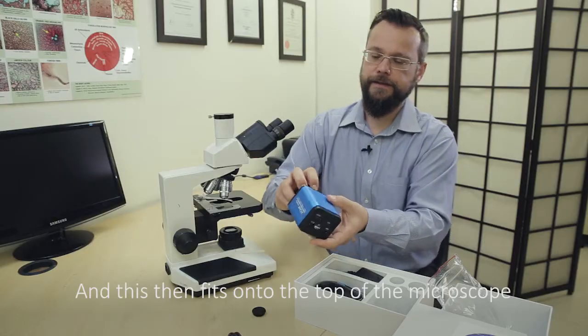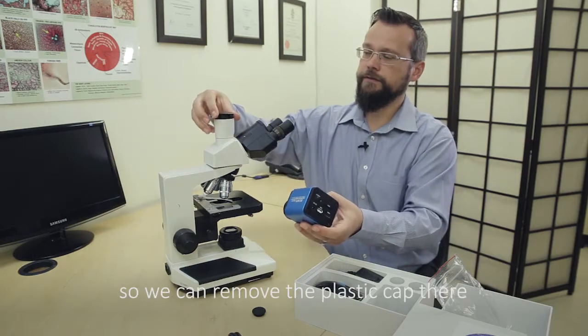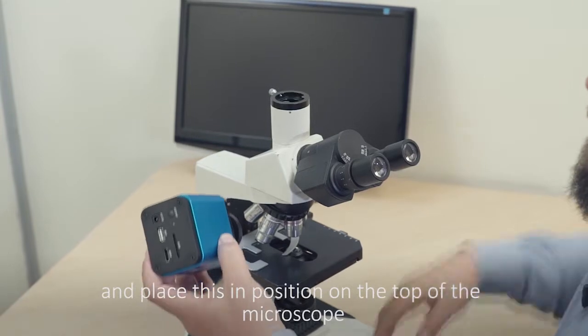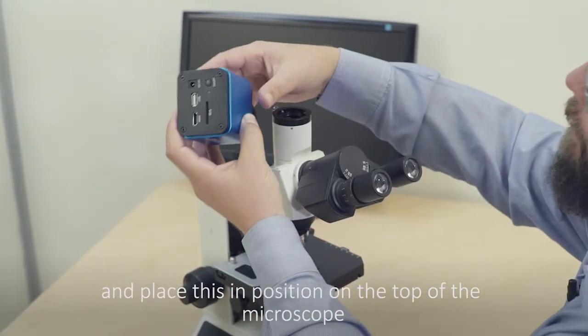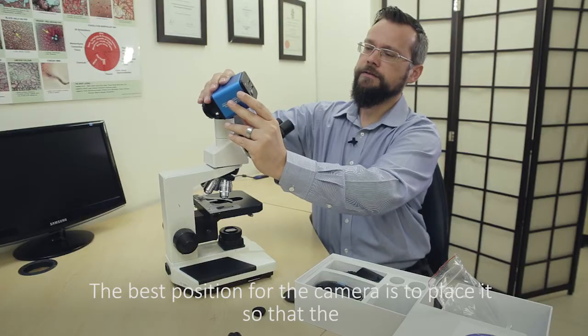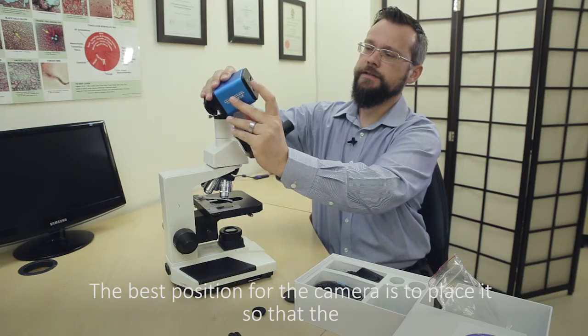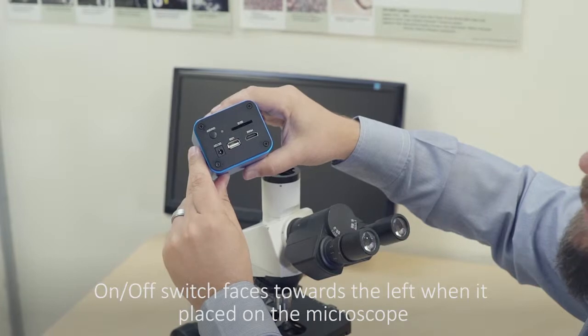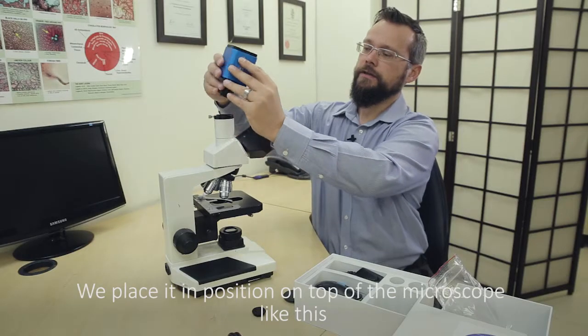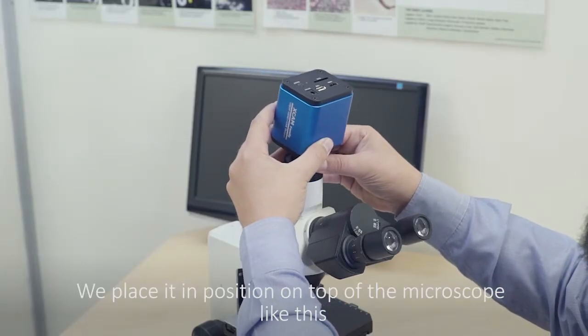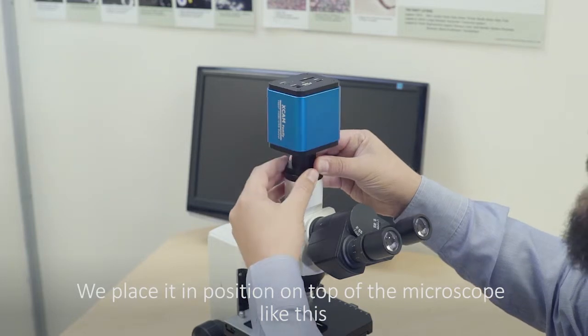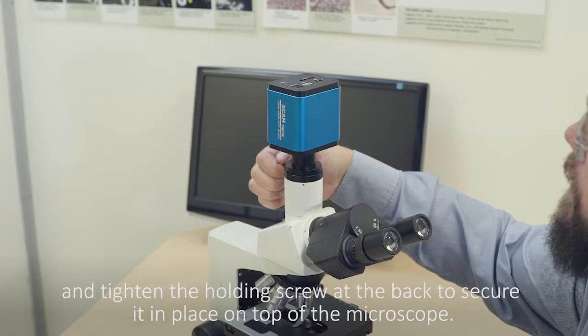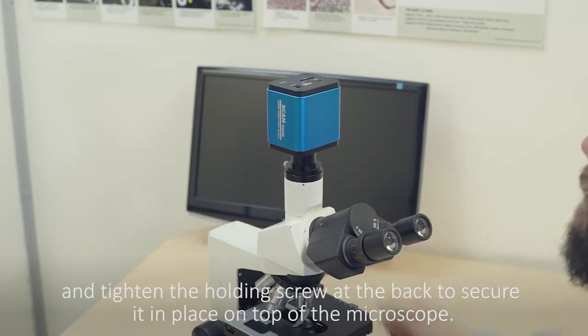And this then fits onto the top of the microscope. So we can remove the plastic cap there and place this in position on the top of the microscope. The best position for the camera is to place it so that the on-off switch faces towards the left when it's placed on the microscope. So we place it in position on top of the microscope like this and tighten the holding screw at the back to secure it in place on top of the microscope.